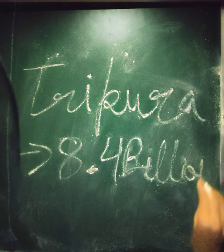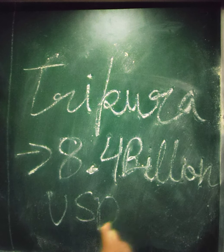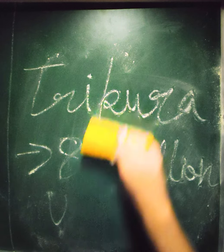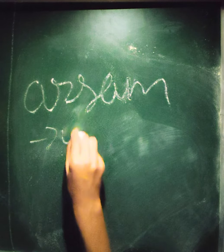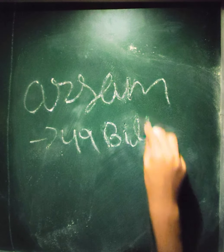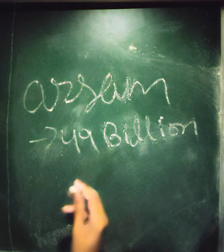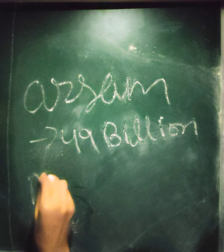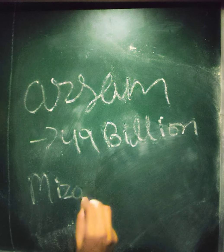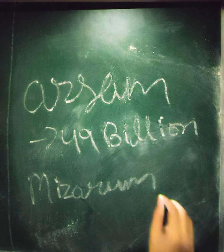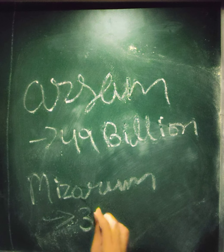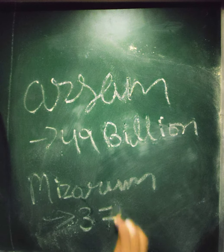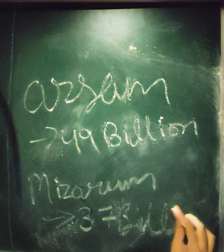So these are the eight states. The highest GDP belongs to Assam with 49 billion US dollars, and the lowest is Mizoram with a GDP of 3.7 billion US dollars.